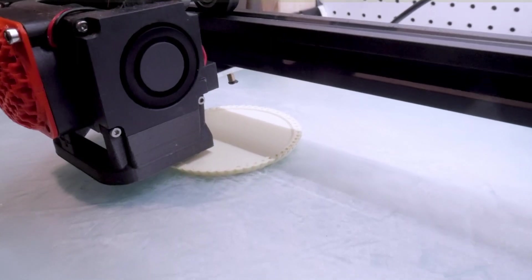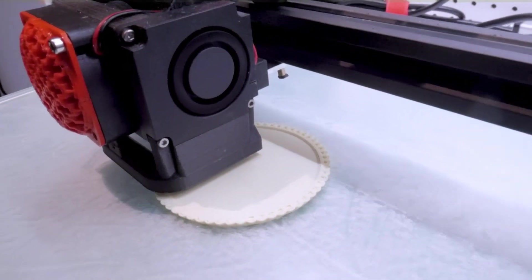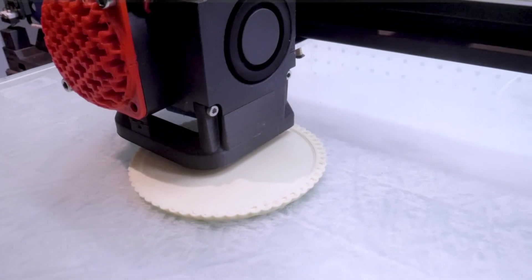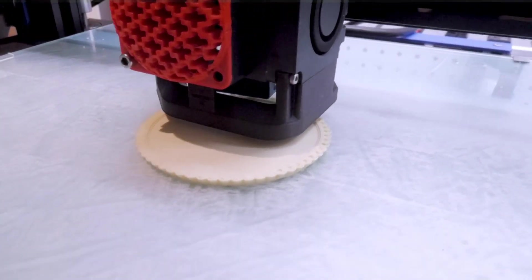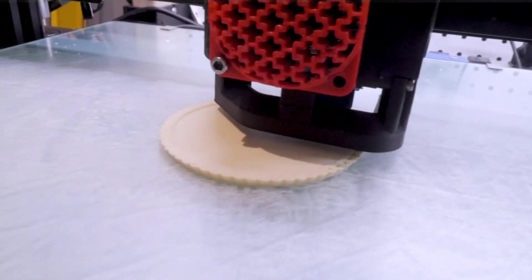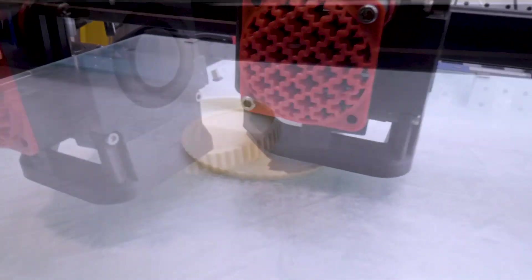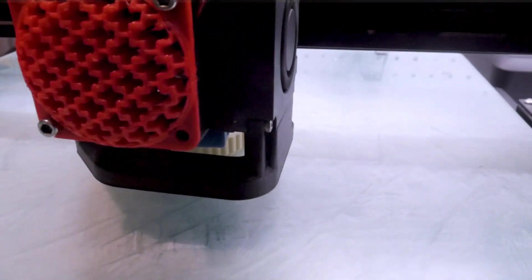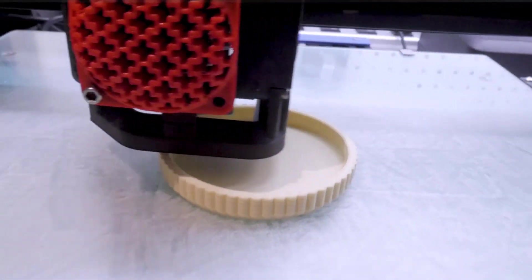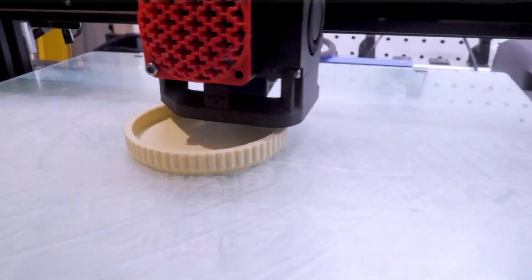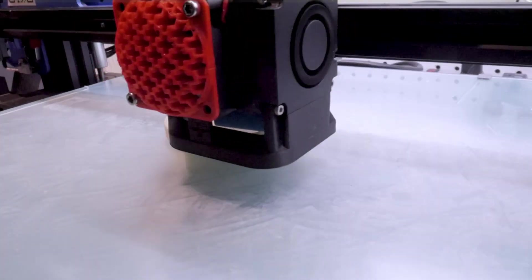Armed with this new knowledge, I put together a custom profile in PrusaSlicer for the eSun matte filament. The main setting I changed was the extrusion multiplier, which I bumped up a few percent, and this made a world of difference. All the remaining prints I printed turned out a lot better and I didn't have that under-extrusion issue.